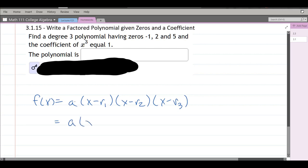They gave us all these numbers, x minus negative 1, x minus 2, x minus 5, and of course x minus negative 1 is x plus 1.